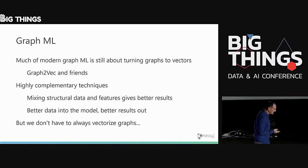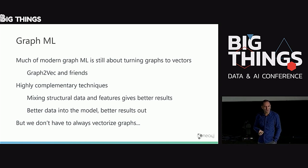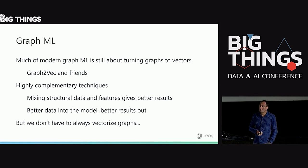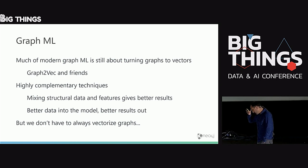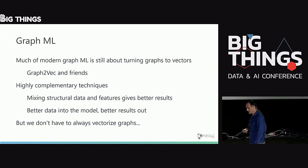If you mix graph features with traditional data — textual data, numerical data and so on — you can produce models that are unholy accurate and brilliant. Much of modern graph machine learning is still vectorizing: taking a graph, extracting features, creating vectors with graph-to-vec and friends. These are complementary techniques with the machine learning pipelines we already know. But we don't always have to vectorize — there are other opportunities within graphs.